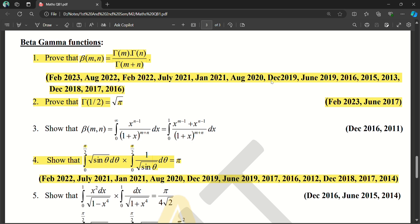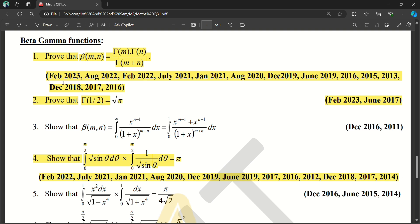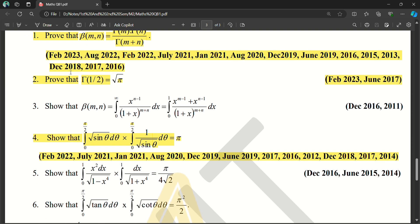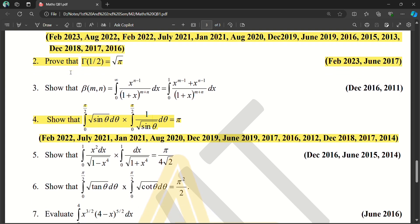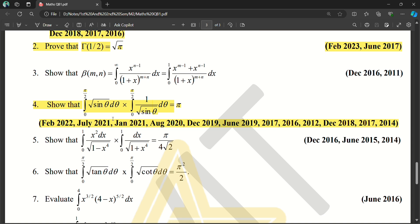Now next, Beta Gamma functions. First, the relation between beta and gamma. You can see how many times it has been asked in previous year questions, so you have to do it perfectly without doing any mistake. You have to prepare it. You can see also the fourth question, how many times it has been asked in semester examinations. We have to do this also perfectly.